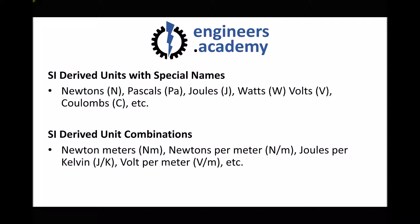Moving on, we have SI derived units with special names — newtons, pascals, joules, watts, volts, coulombs, and many other examples. Focusing on newtons: a newton is a measure of force, and force equals mass times acceleration. Without the special name, mass is kilograms and acceleration is metres per second squared, giving us the complicated unit of kilogram metres per second squared. So instead we call that a newton, attributing that name to Sir Isaac Newton for his work in this field. The same applies to pascals, joules, watts, and so on.